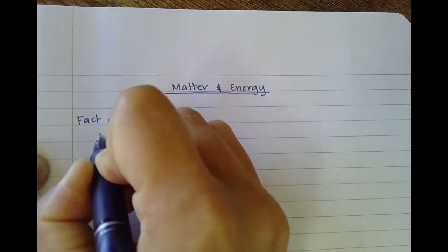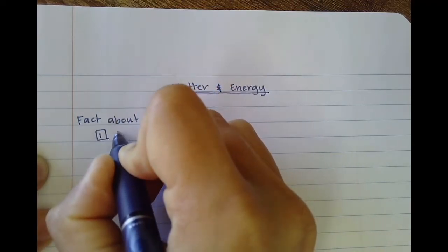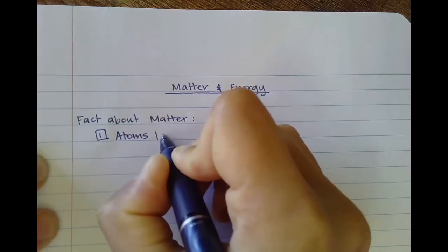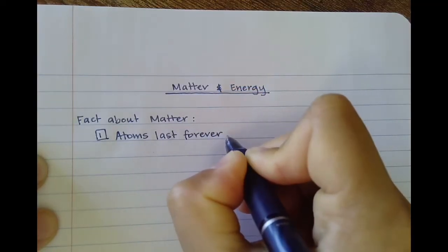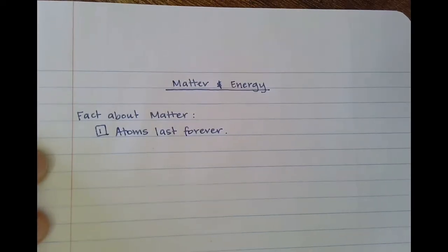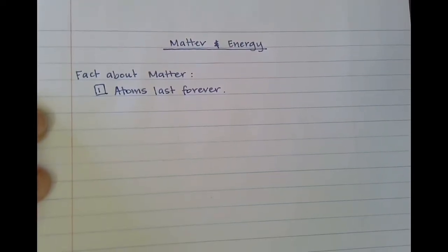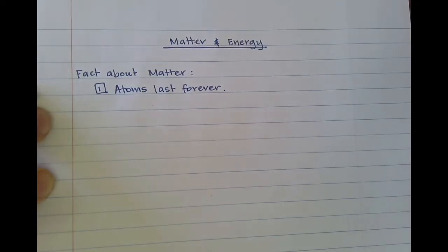Our first fact about matter is that atoms last forever. What this means is that atoms cannot be created or destroyed. This is not entirely true — nuclear reactions, like what happens in the sun, can make and break atoms.